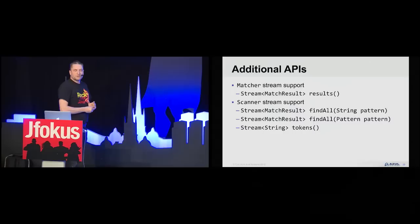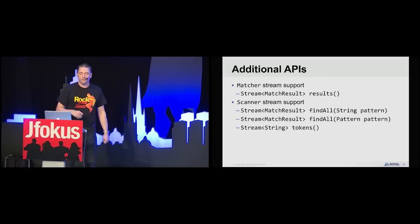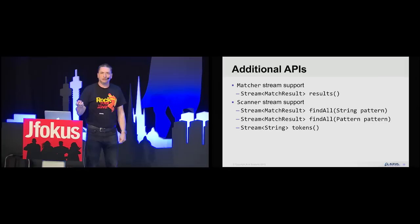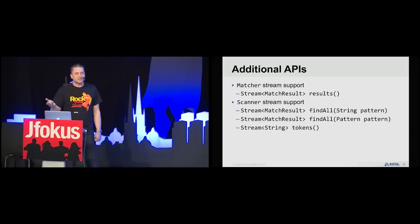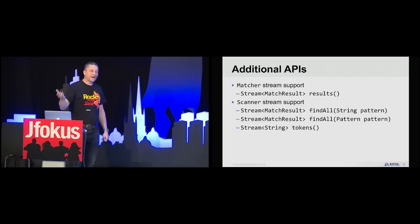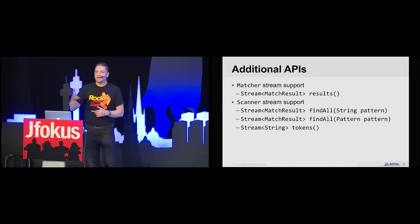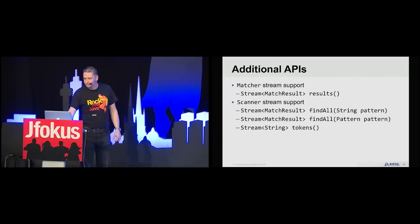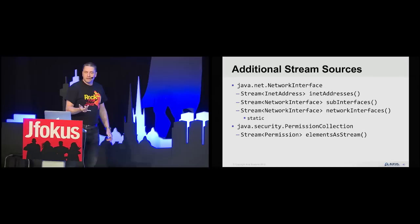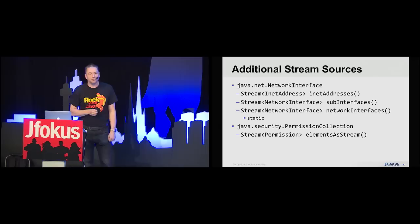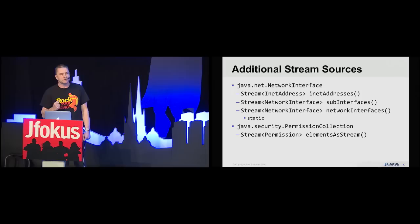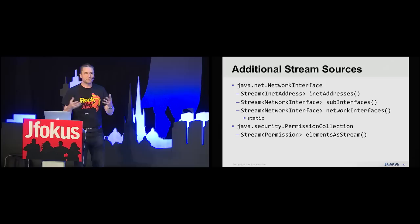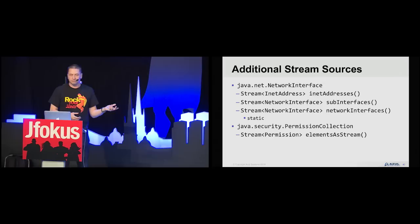A few other JDK 9 stream additions: in the Matcher class you can now get match results as a stream via pattern matching. Scanner similarly has findAll based on a pattern string or Pattern object, returning a stream of match results, and you can also get raw tokens as a stream of strings. In terms of stream sources from networking: NetworkInterface now lets you get addresses, sub-interfaces, and network interfaces as streams. And for permission collection, you can get permissions as a stream.